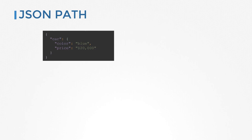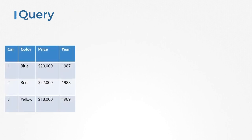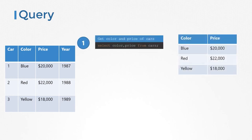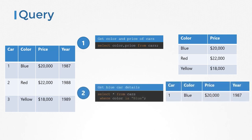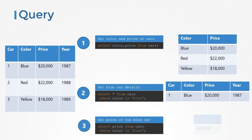JSON path is a query language that can help you parse data represented in a JSON or YAML format, just like query languages in popular database software like SQL. For example, if given a table of data, you could run a query to extract only certain fields like color and price of cars, extract certain rows like all information about a blue car, or extract specific fields of certain rows like the price of a blue car. For any given data, you apply a query and you get a result which is a subset of that data.